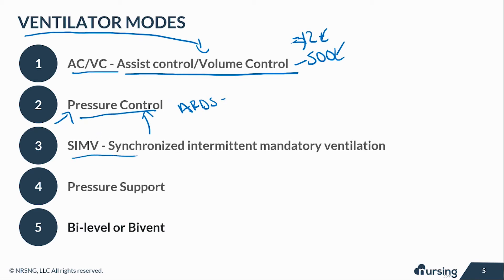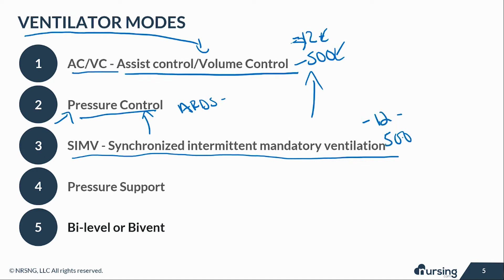Another mode is SIMV, or synchronized intermittent mandatory ventilation. The vent delivers a set rate — for example, 12 breaths per minute at a tidal volume of 500. But if the patient breathes on their own, the vent will also assist with that breath. This mode is used for weaning because it maintains a preset amount while also supporting any spontaneous breaths the patient takes on their own.